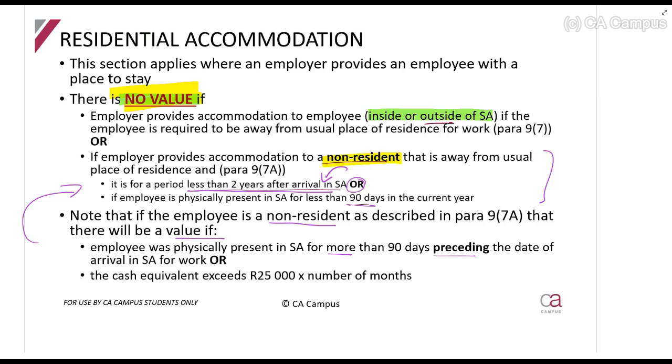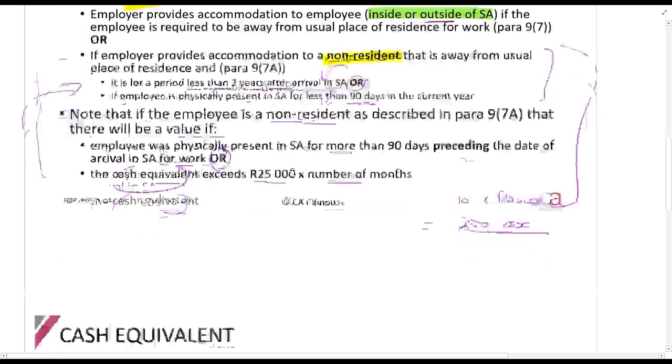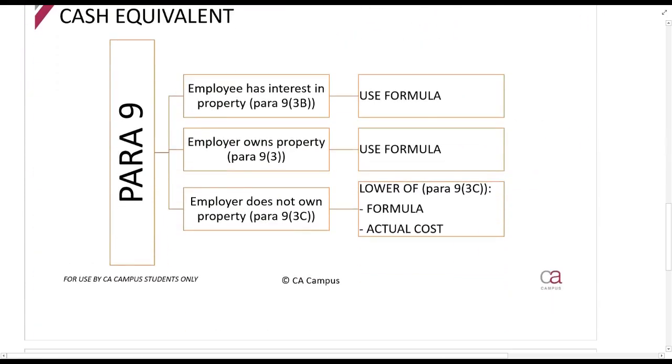Or if the cash equivalent, which we'll see how to calculate, exceeds R25,000 times the number of months. So if they're here for 10 months, times 25,000, that's 250,000. If you calculate the cash equivalent and it's more than 250,000, this non-resident should be taxed.